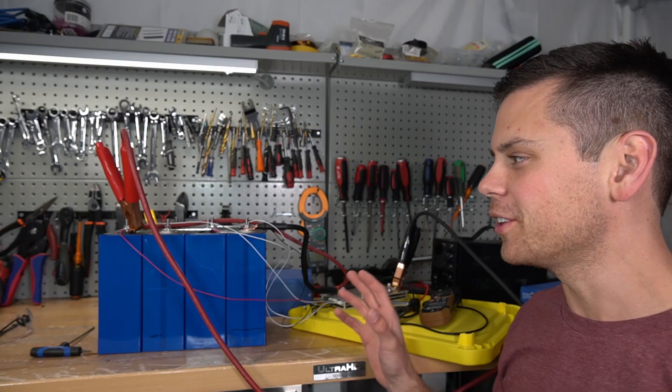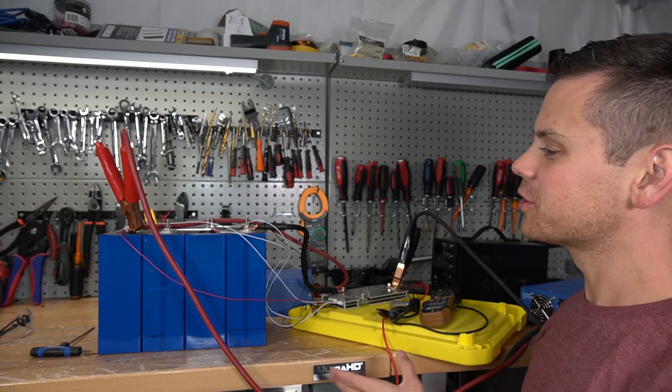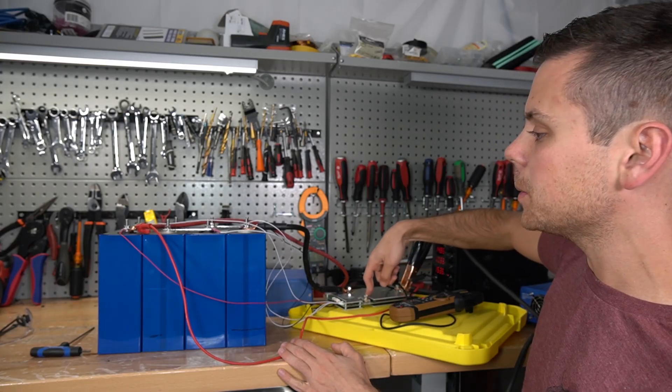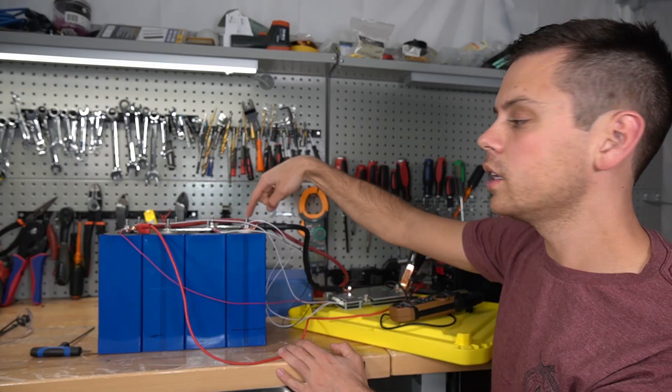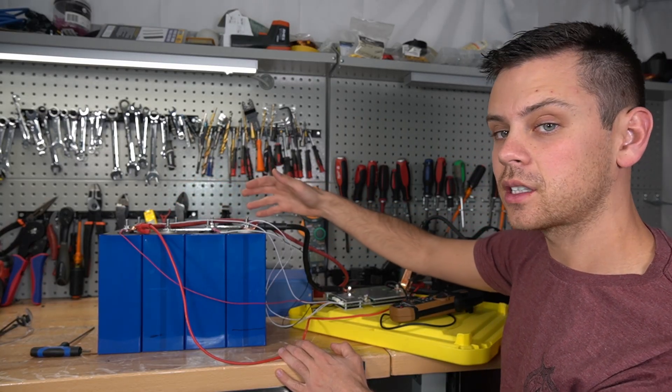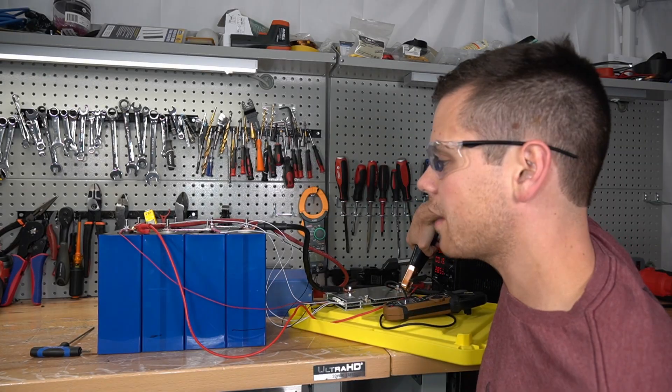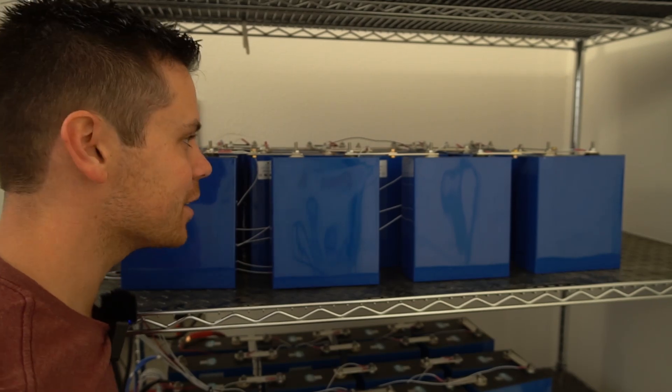Fast forward a week later and the final pack is finally charged. I had so much stuff going on this week. Let's finish up this project. I should mention the JBD BMS 150 amp: I switched the balance leads on cell one and cell three and it did not destroy the BMS. Typically it will destroy them, especially active balancer ones. We have high voltage disconnect, so it's fully charged.